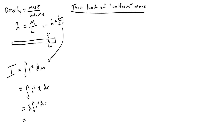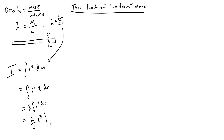The integral of r squared dr gives lambda times one-third r cubed. We'll need to evaluate that from some lower bound to some upper bound. We can write this as lambda over 3 times r cubed. All we need to derive the moment of inertia is to understand what our lower and upper bounds are.